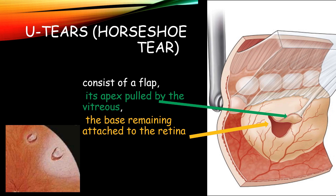The first lesion I will discuss is a U-shaped tear, also known as a horseshoe tear or HST. It consists of a flap whose apex is pulled by the vitreous and the base remains attached to the retina.